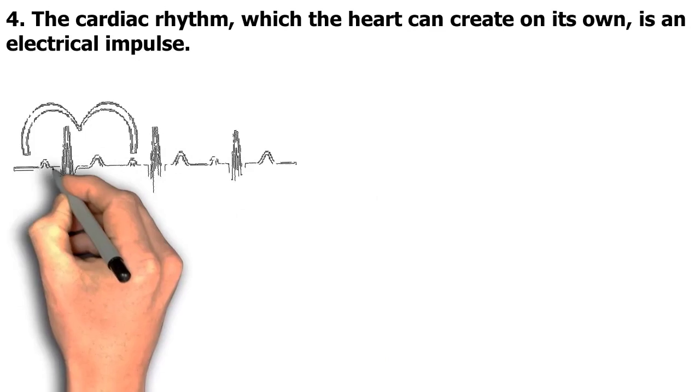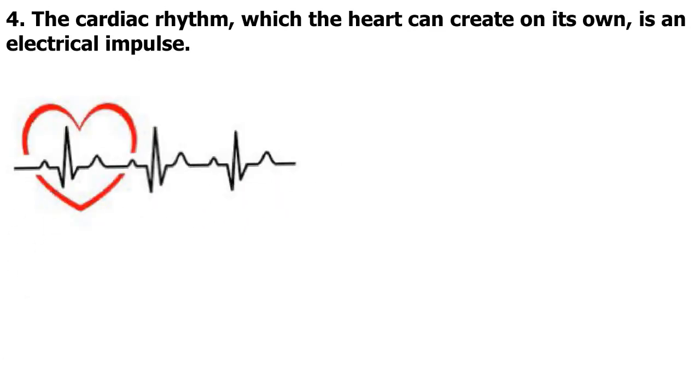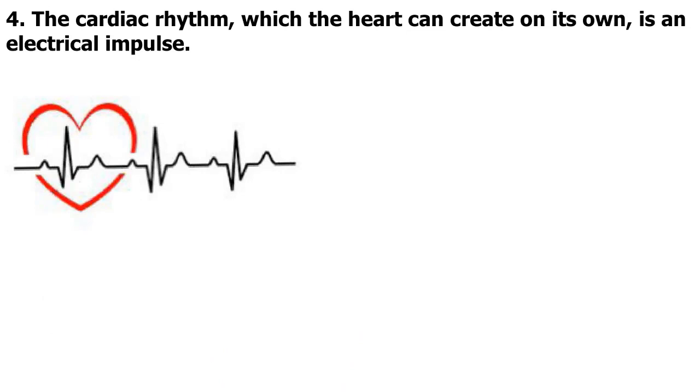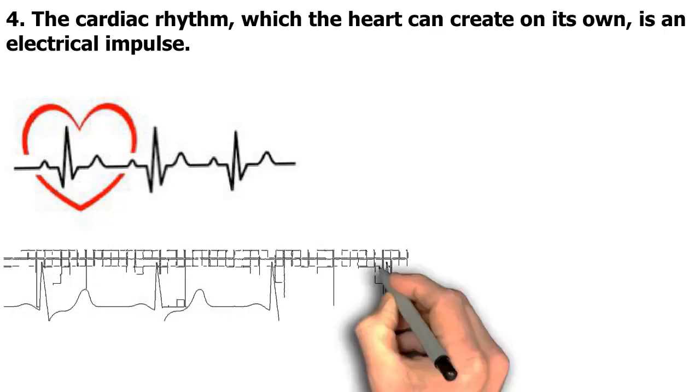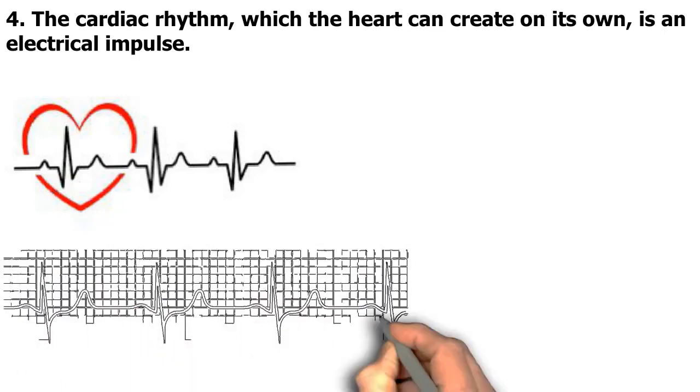Given that the heart is a muscle and that all muscles require electrical impulses in order to operate, this fact is quite amazing. The heart can function independently of the brain and nervous system because it can generate its own electrical impulses.